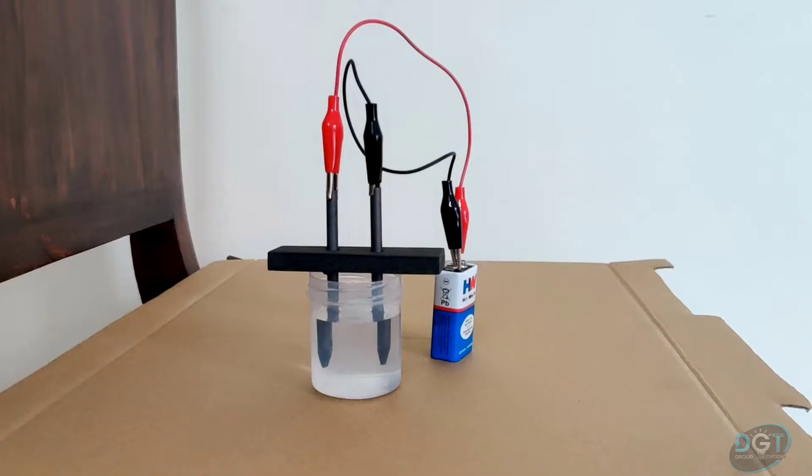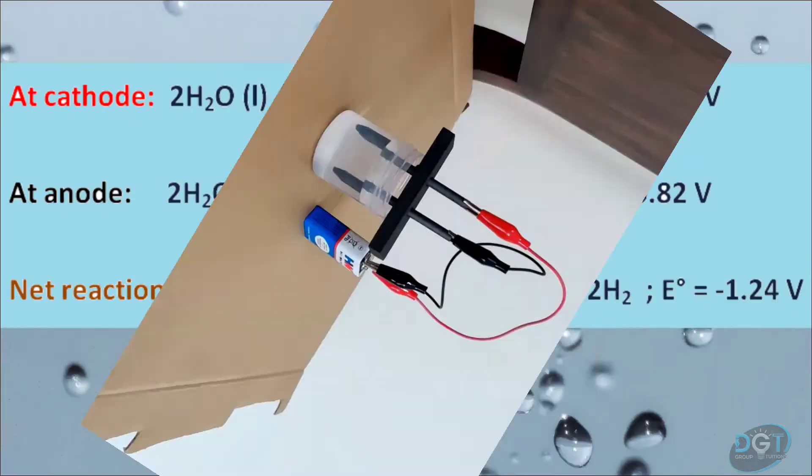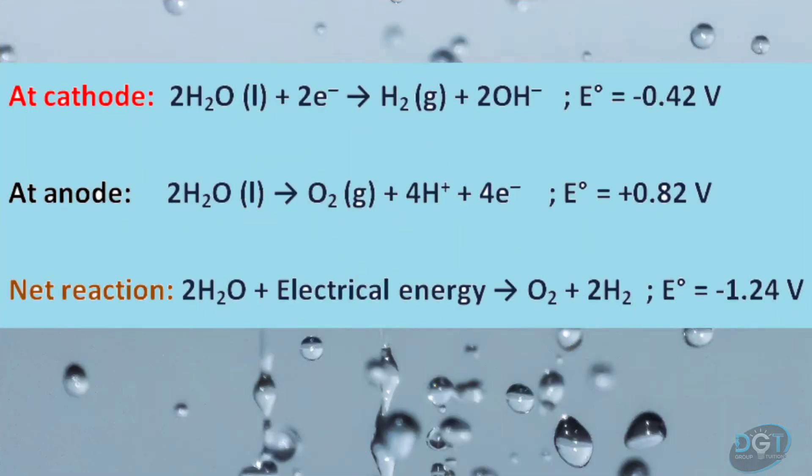Once the circuit is set up, current starts flowing through the electrodes and electrolysis of water starts. The chemical reaction involved is given by this at cathode, at anode and the net reaction.